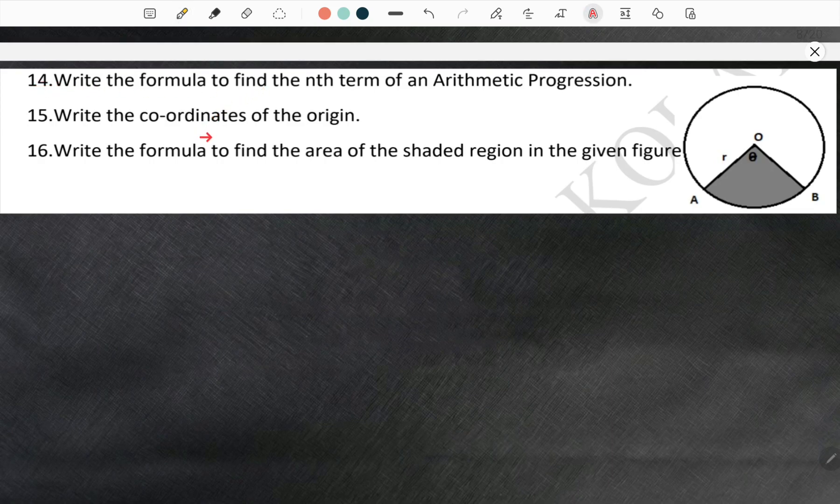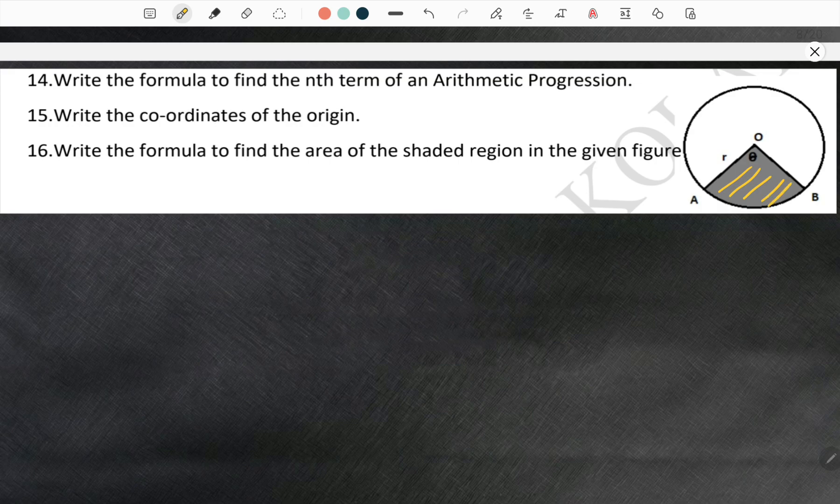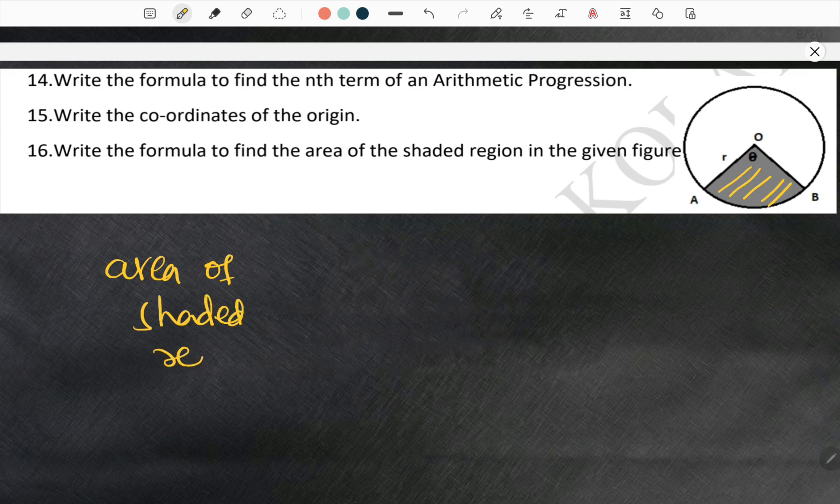Fourteenth and fifteenth already we solved. Now we are looking at the sixteenth question. Write the formula to find the area of the shaded region in the given figure. Here is the given figure. This is the shaded region. So area of shaded region, that is like a sector.